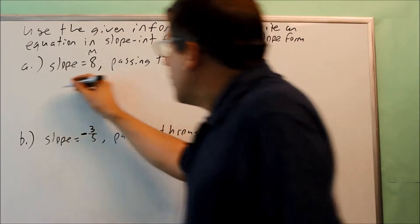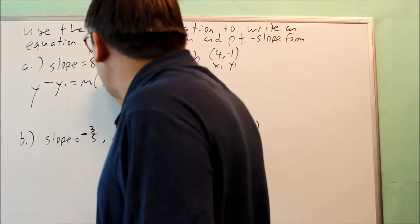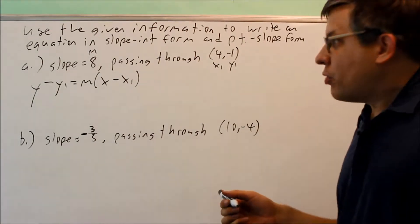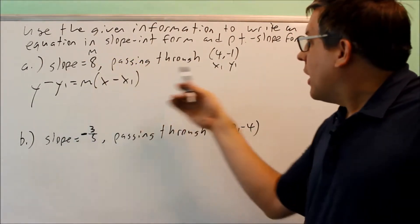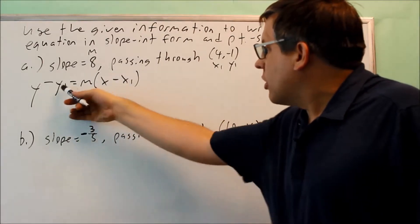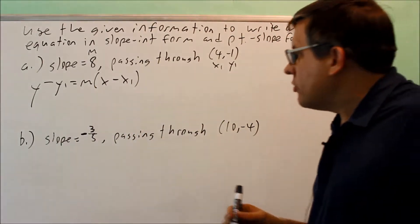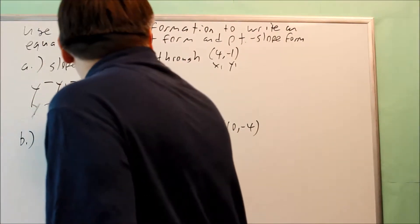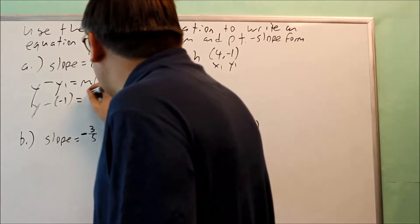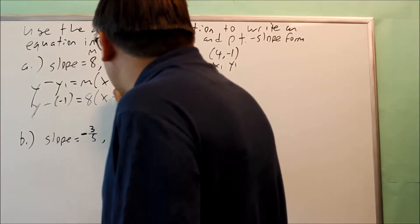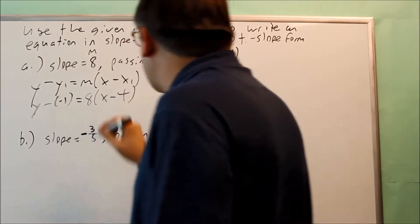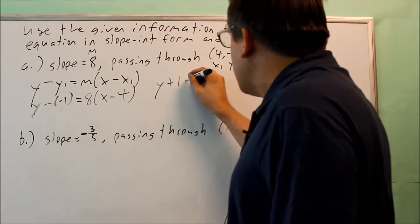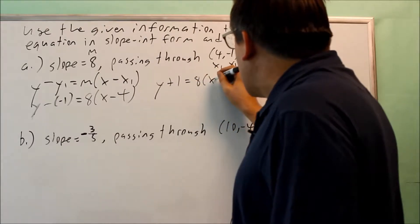First, I'm going to write the point-slope formula. I'll plug in m, x1, and y1. So I get: y minus y1, which is y minus negative 1, equals m, which is 8, times x minus x1, which is x minus 4. Simplifying, y plus 1 equals 8 times (x minus 4).